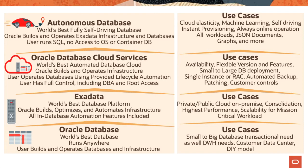Autonomous Database supports all kinds of workloads with support for JSON documents, graphs, and more. When it comes to Oracle Database Cloud Services, this is the world's best automated database cloud infrastructure. Oracle builds and operates the infrastructure; the user operates databases using provided lifecycle automation with full control including database administration and root access. This is useful for customers who want high availability, want to deploy older versions, want all features of Oracle Database, and can start off with small workloads and scale up to large databases.